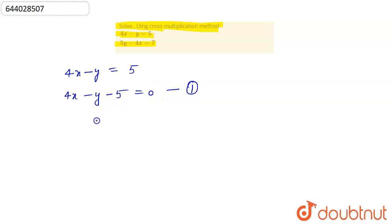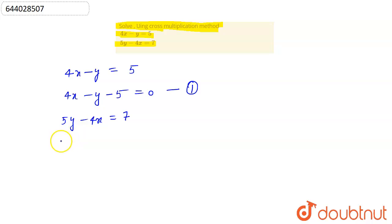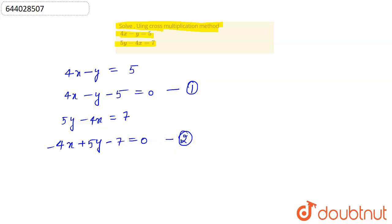We name that equation 1. For equation 2, we have 5y minus 4x equals 7. Taking the constant to the left side gives minus 4x plus 5y minus 7 equals 0. This is the standard form of equation number 2.